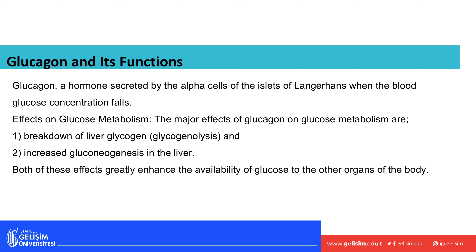Glucagon is secreted by the alpha cells of the islets of Langerhans when blood glucose levels start to fall. Glucagon has the opposite effects of insulin — instead of decreasing blood glucose, glucagon increases it. It promotes the breakdown of glycogen in the liver and skeletal muscle, and increases gluconeogenesis.